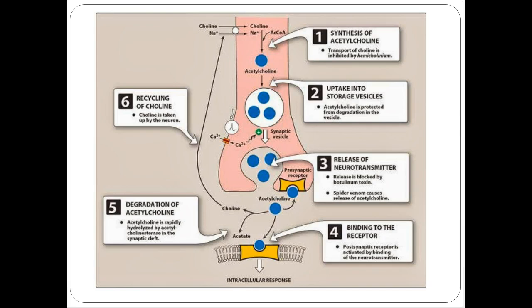This diagram shows how acetylcholine works within the peripheral nervous system and the different ways drugs can alter the system. One: synthesis of acetylcholine — there's a reference drug called hemicholinium that isn't used anymore. Two: uptake into storage vessels — not really used. Three: release of the neurotransmitter — this can be blocked via botulinum toxin, or Botox, and some venoms cause this effect as well. Four: binding to the receptor — several drugs block that binding. Five: degradation — that's where acetylcholinesterase comes in. If we inhibit acetylcholinesterase, we can increase the presence of acetylcholine.